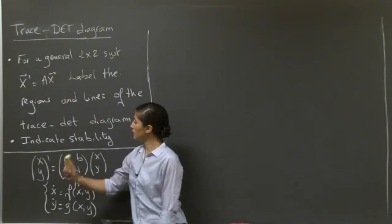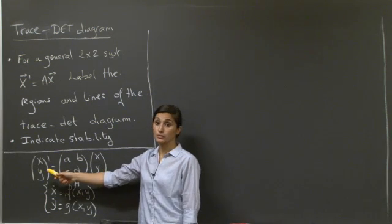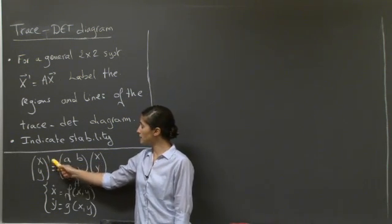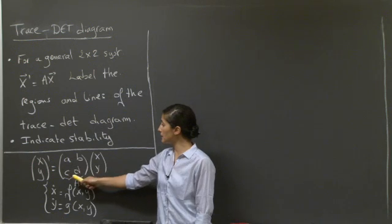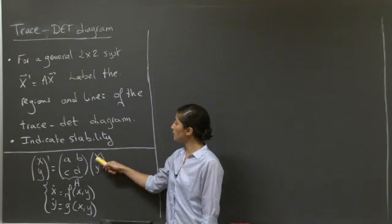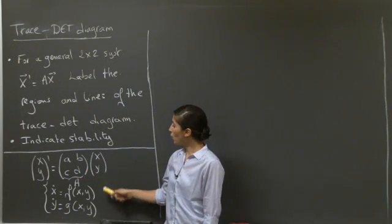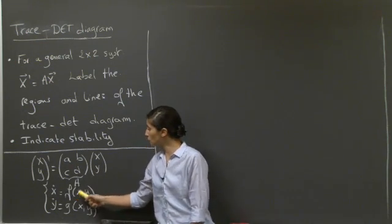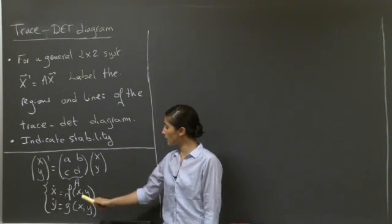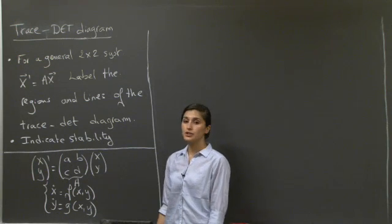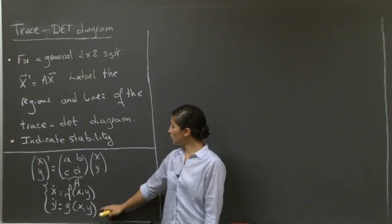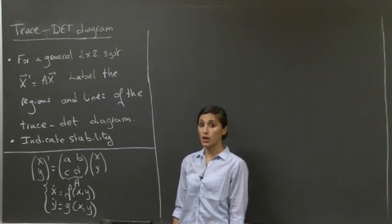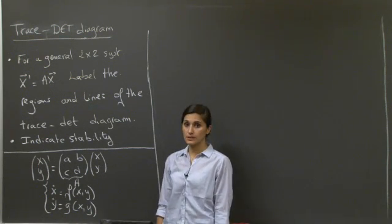As a reminder, this system is simply a system of two differential equations in vector form: the derivative of [x, y] equals a 2x2 matrix A = [[a,b],[c,d]] multiplying the vector [x, y]. Or in another form, x-dot equals f(x,y) and y-dot equals g(x,y), where t doesn't appear in f and g, which means the system is autonomous. We're dealing with linear systems.